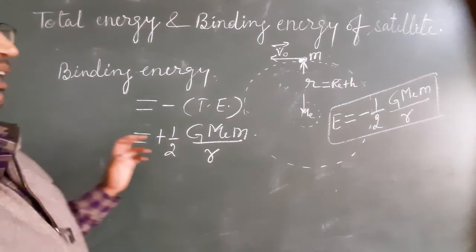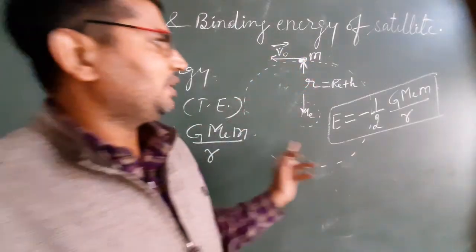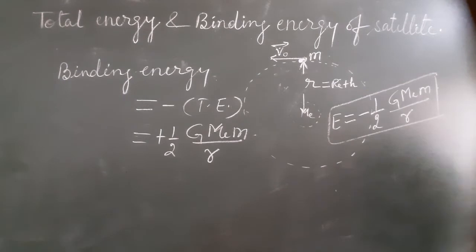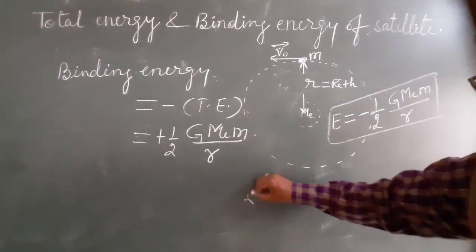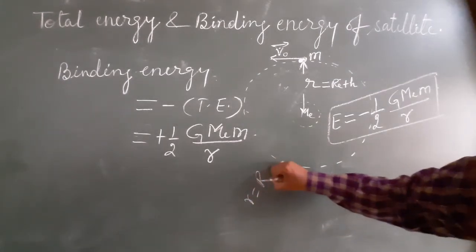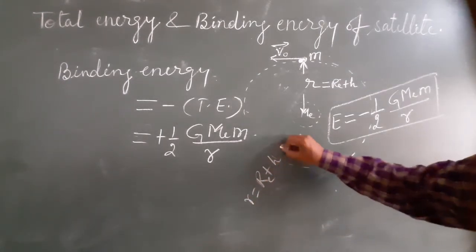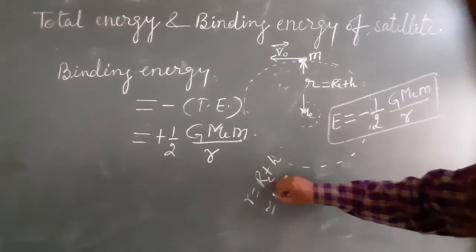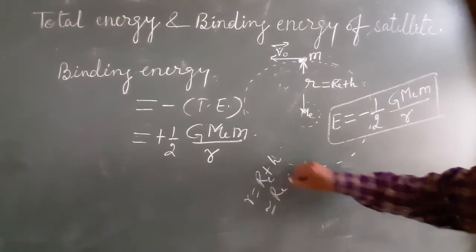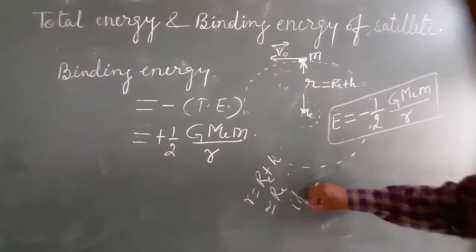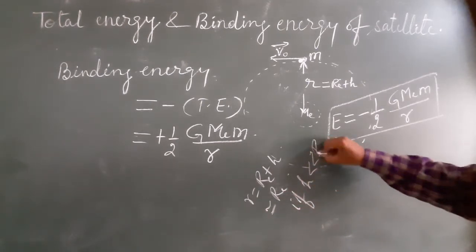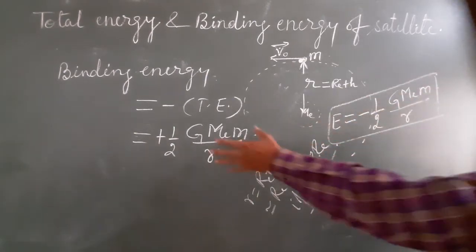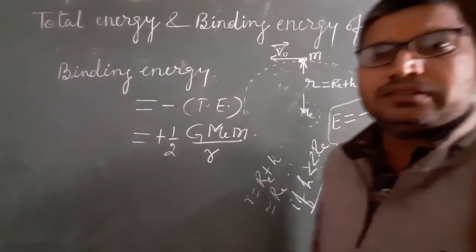One thing more: if the satellite is revolving very close to earth's surface, in that case r equals R_e plus h is approximately equal to R_e, if h is very very small in comparison to R_e. So this is all about total energy and binding energy of satellite. Thanks.